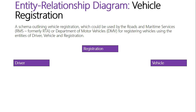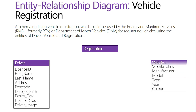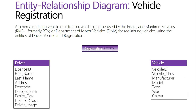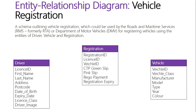Each of those entities has their own fields. In the entity relationship diagram these fields are called attributes. For the driver entity we have: license ID, which is the license number on every individual driver's license, first name, last name, address, postcode, date of birth, expiry date, license class, and driver image.